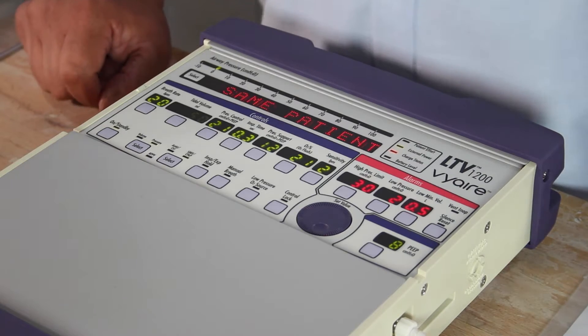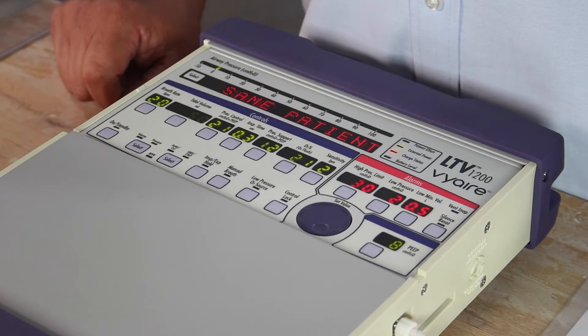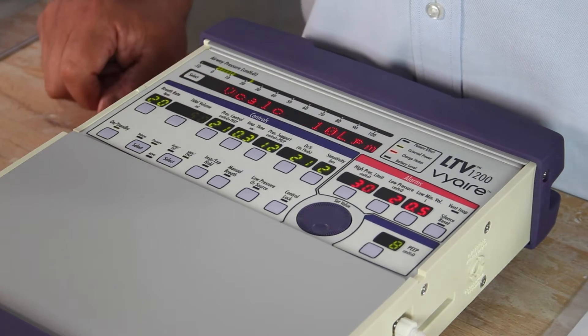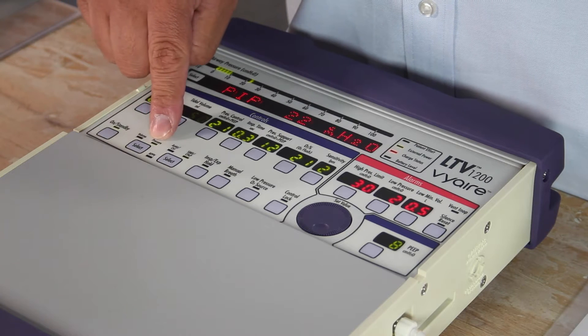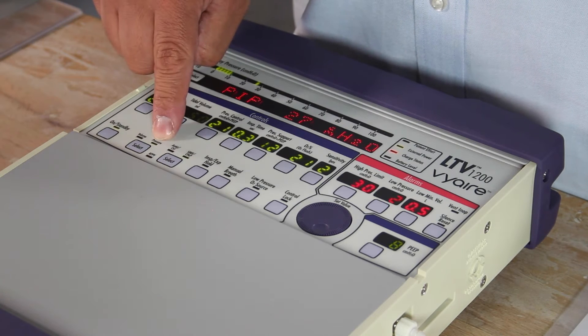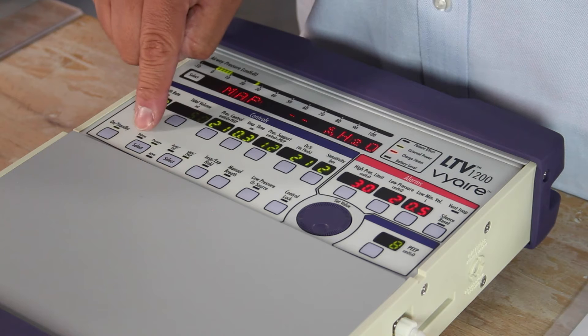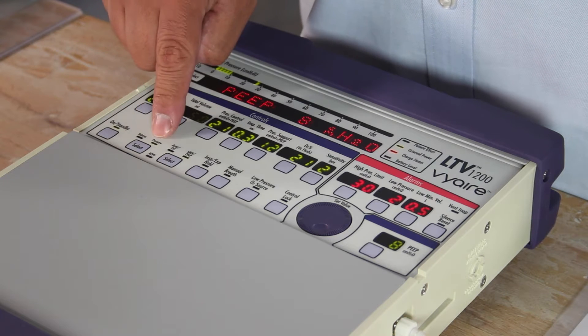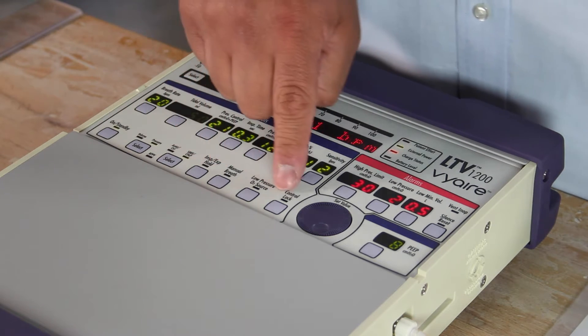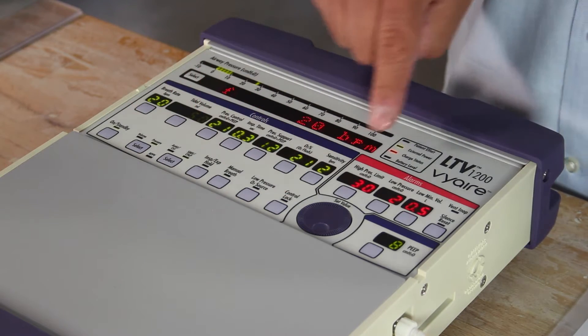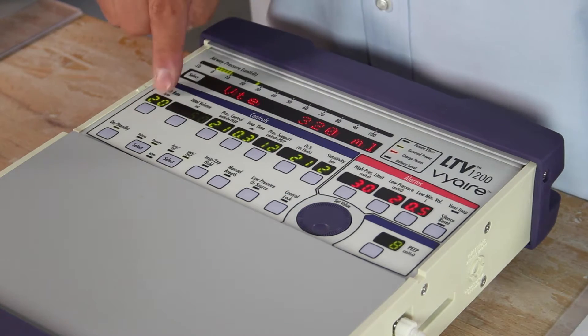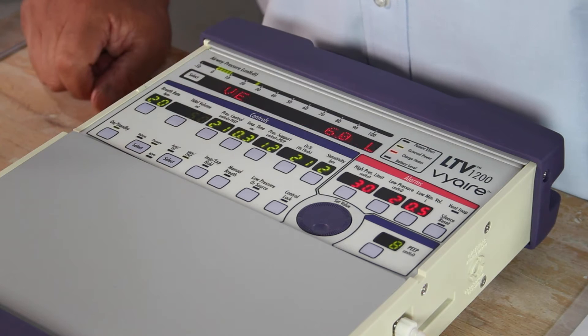The ventilator can be run in volume and pressure. To switch from one to the other, whichever mode is being highlighted is what we're currently using on the ventilator. Whatever's dimmed or dashes is not being used.